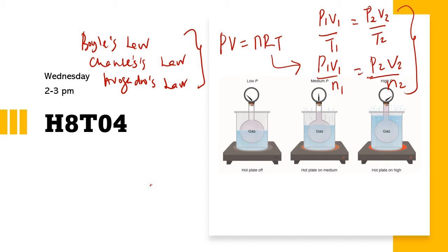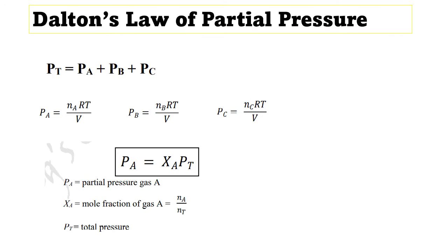Since you have completed Exercise 5.1, we will move to the next section — the next gas law, which is Dalton's Law of Partial Pressure. What is partial pressure? Partial pressure is the pressure exerted by an individual gas in a container. For example, if we have gas A, gas B, and gas C placed in the same container, the pressure exerted by gas A alone is what we call the partial pressure of A.